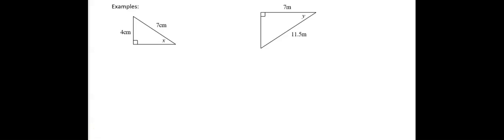Your first step is to label your triangle. So relative to x, this four is the opposite side, and then this seven is opposite the biggest angle — the red angle — so it is labelled the hypotenuse. Your next step is to write down your SOHCAHTOA.